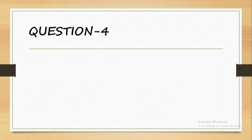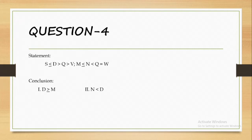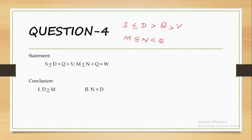The fourth question is a little different — it is at a tougher level. Here we will see two cases with two statements. Statement 1: D less than or equal to Q, greater than V. Statement 2: M less than or equal to N, less than Q, equal to W. To compare D and M, we find the common letter — Q — and proceed from there.